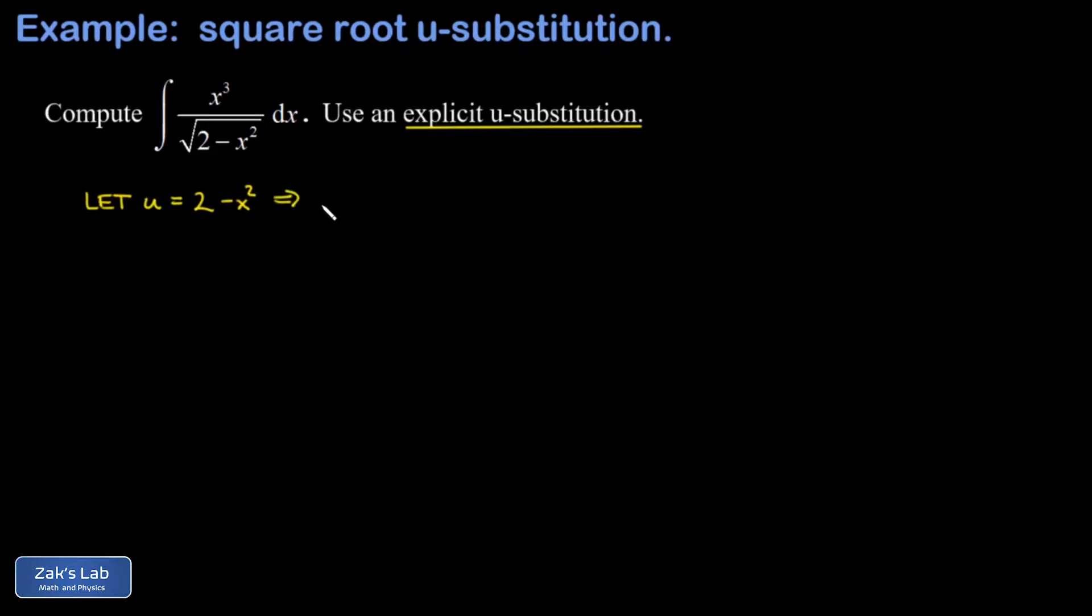So we move along with our u-sub and we get the differential of u. So we take the derivative of it and multiply by dx. That's negative 2x dx. Now I can see in my numerator that I could split off an x out of that x cubed, and that would give me an x dx, which basically gets the job done. But then I'm left with an extra x squared up there.